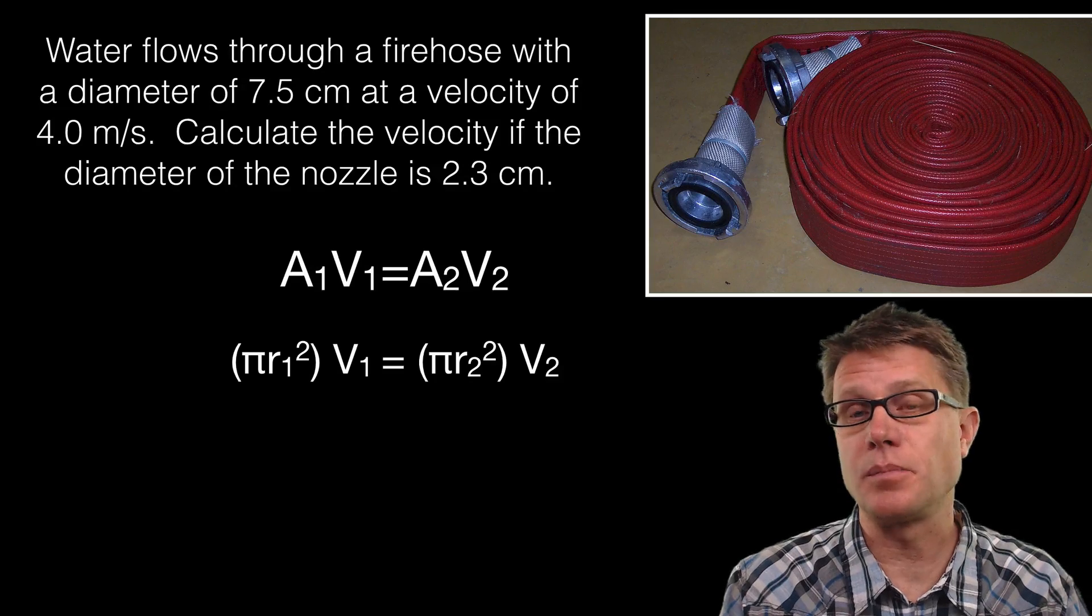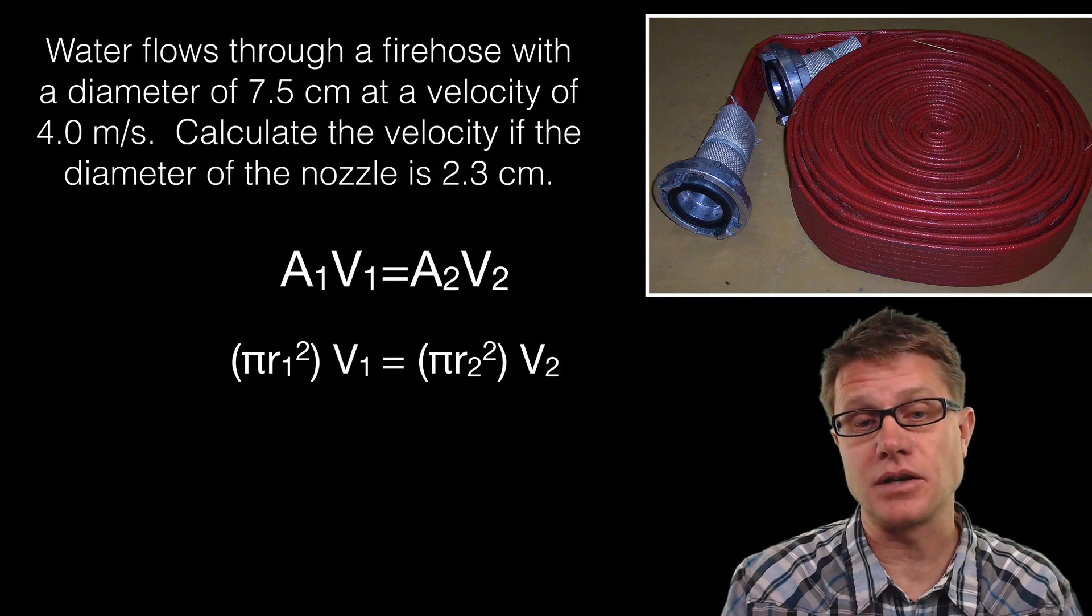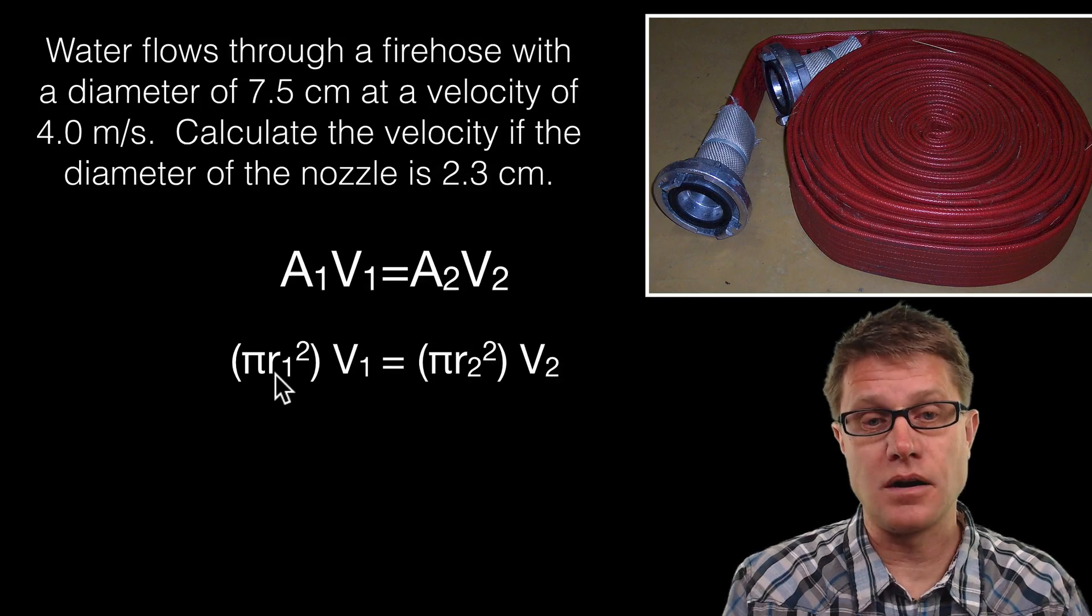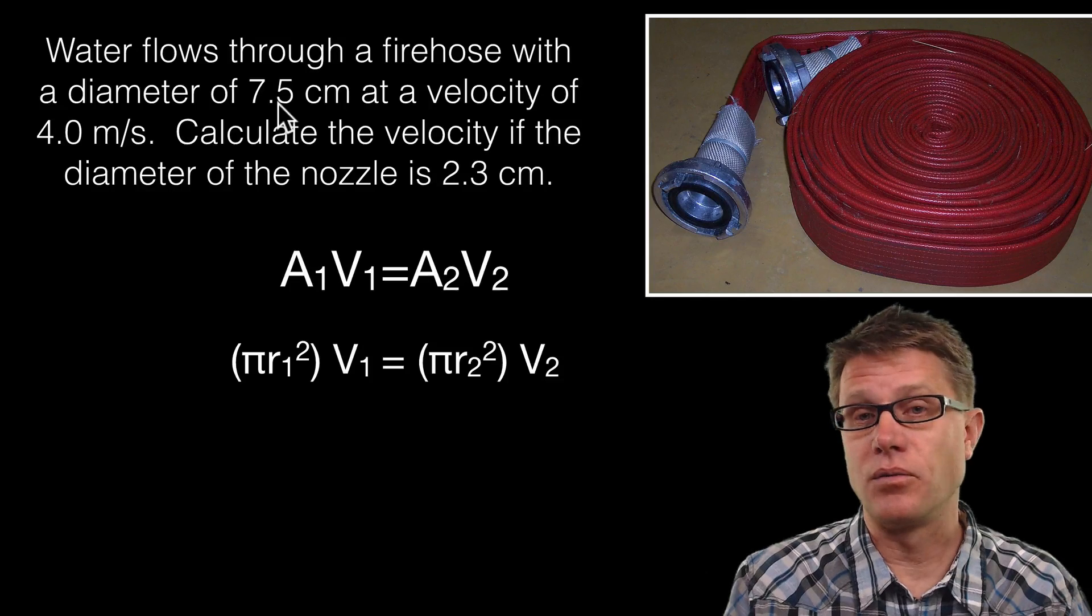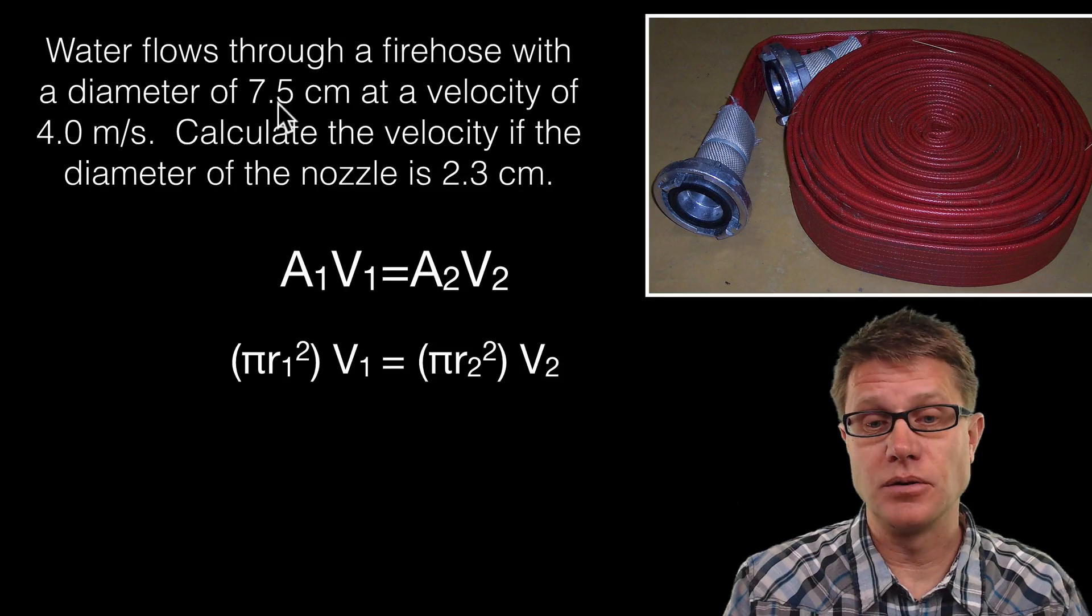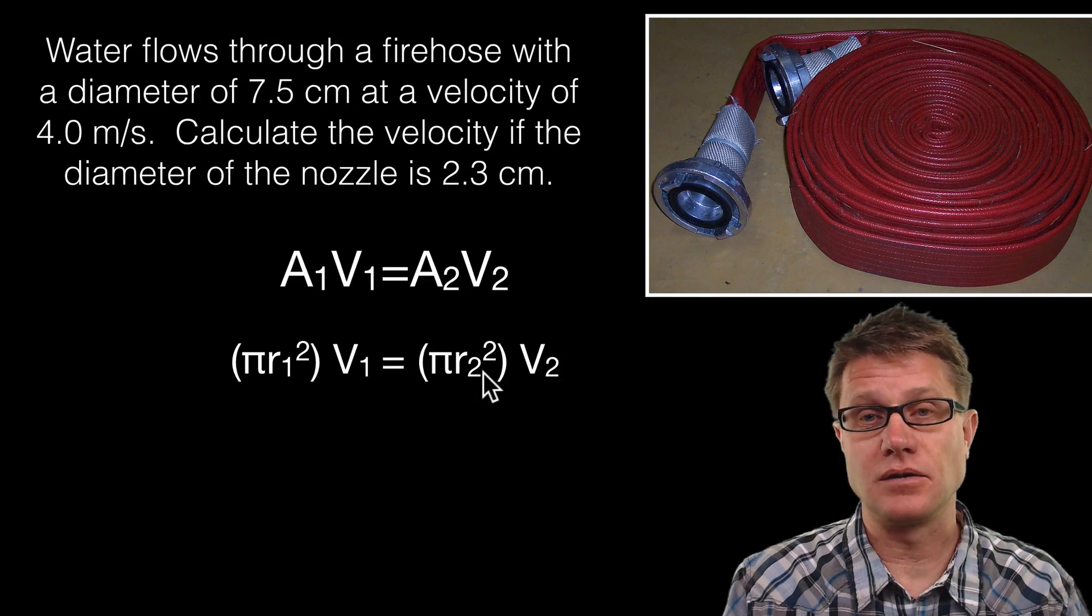So if I write out the formula, we are going to use πR² to calculate that cross-sectional area, where R1 is going to be the radius in the fire hose, and R2 is going to be the radius in the nozzle itself.